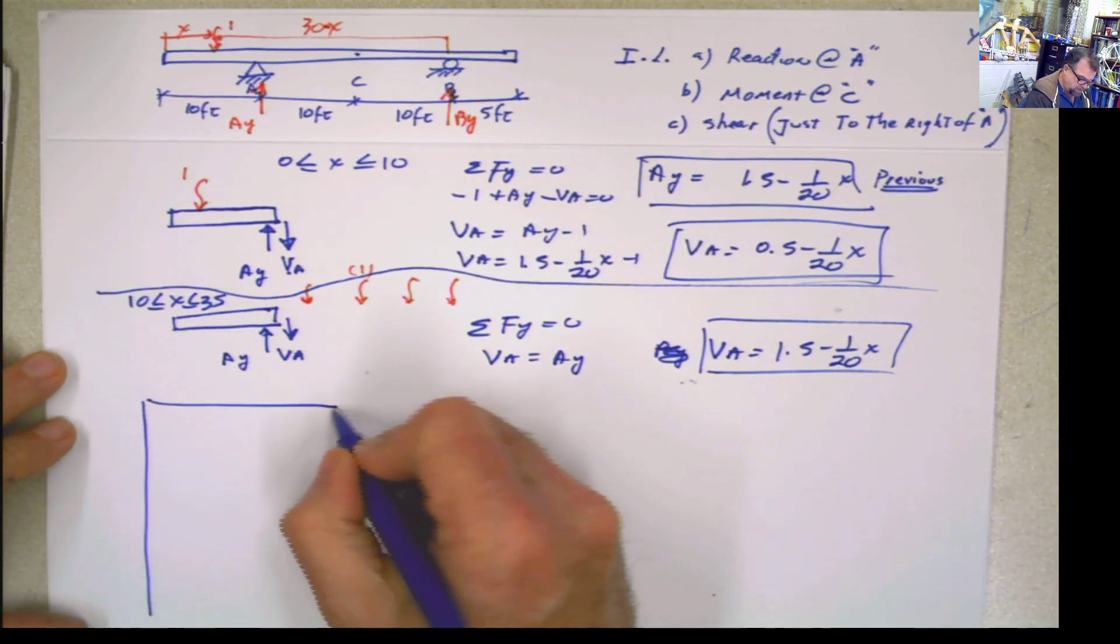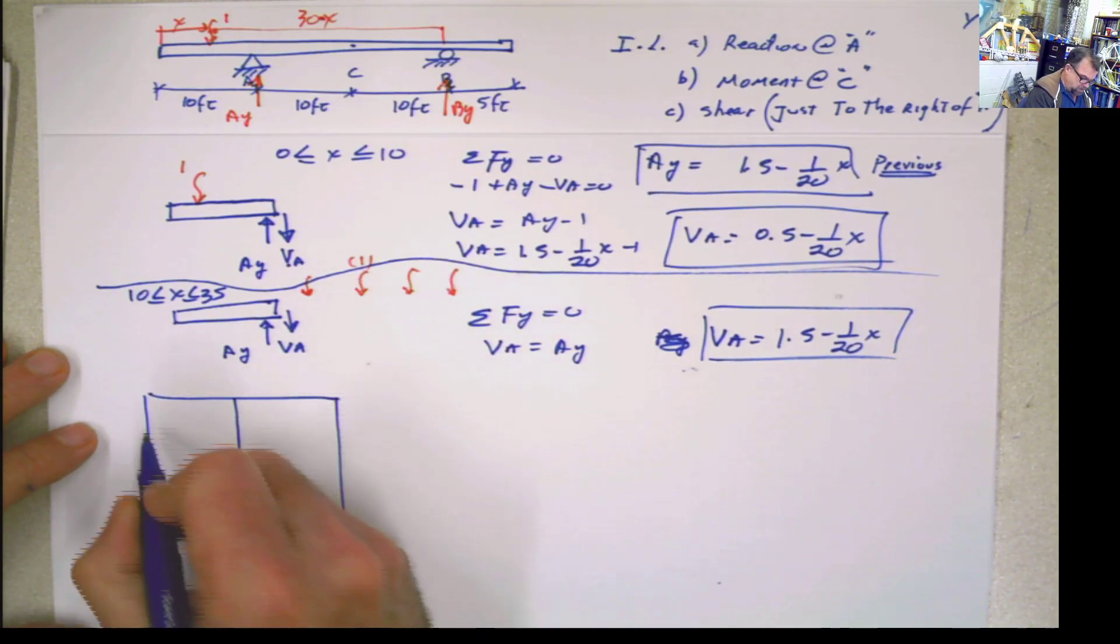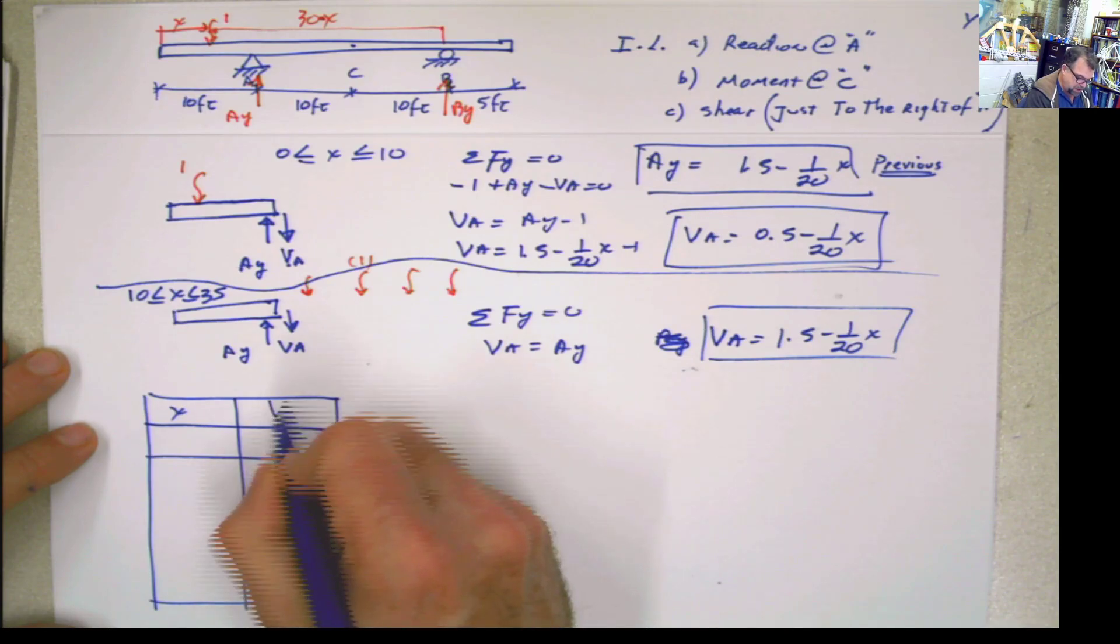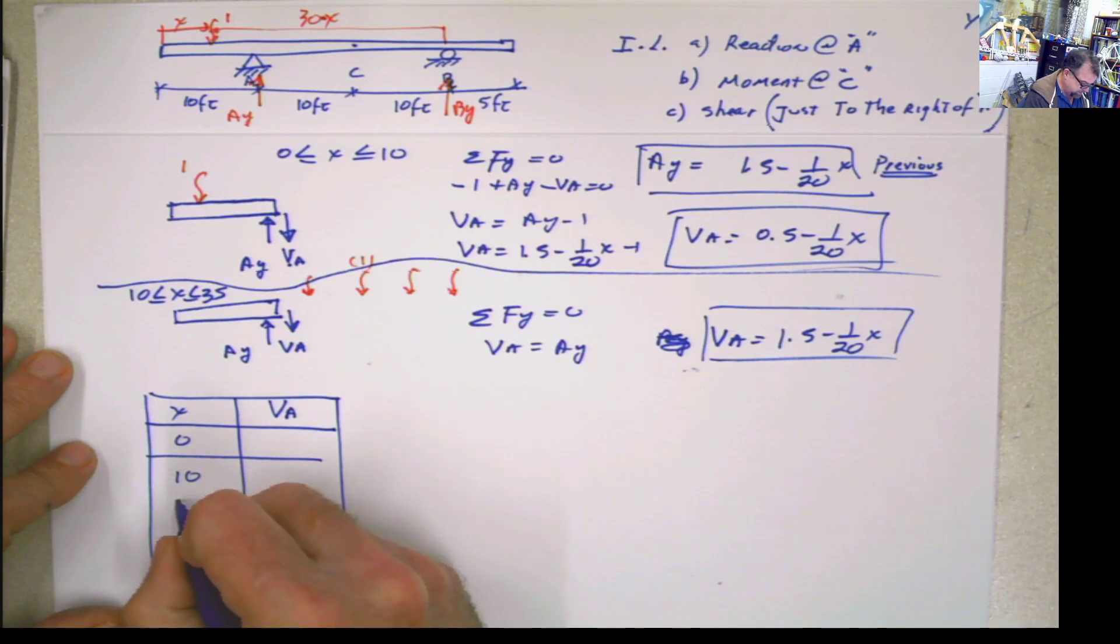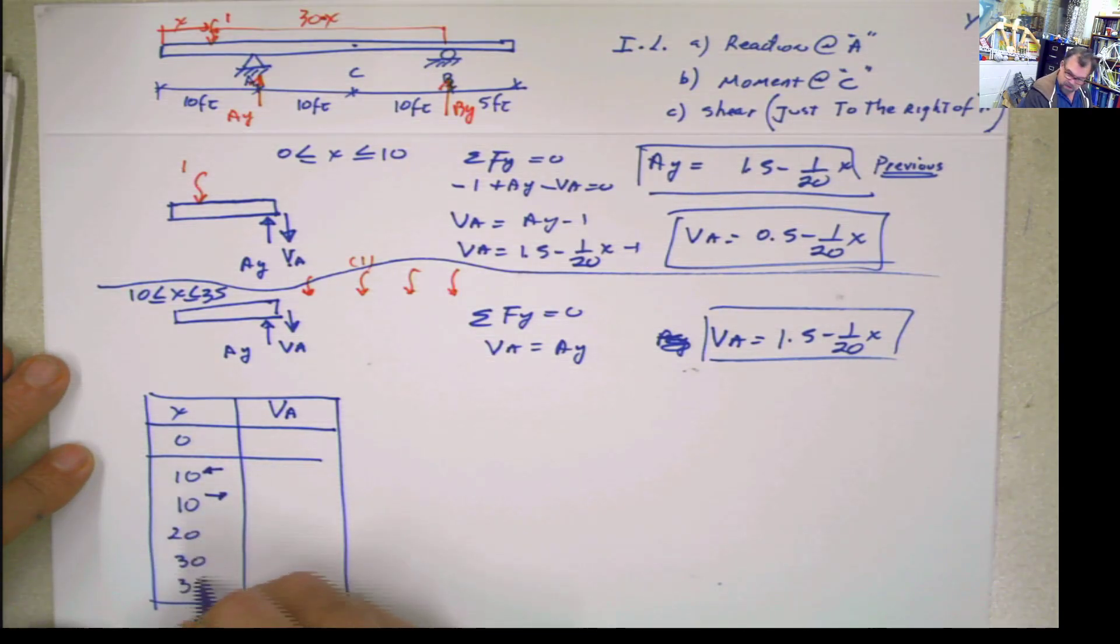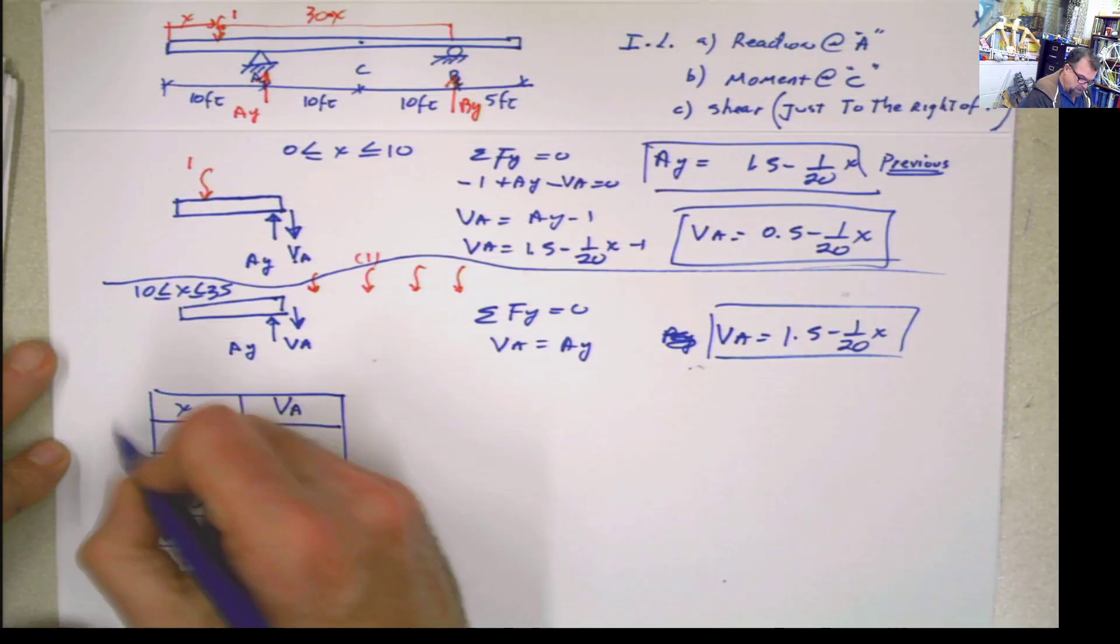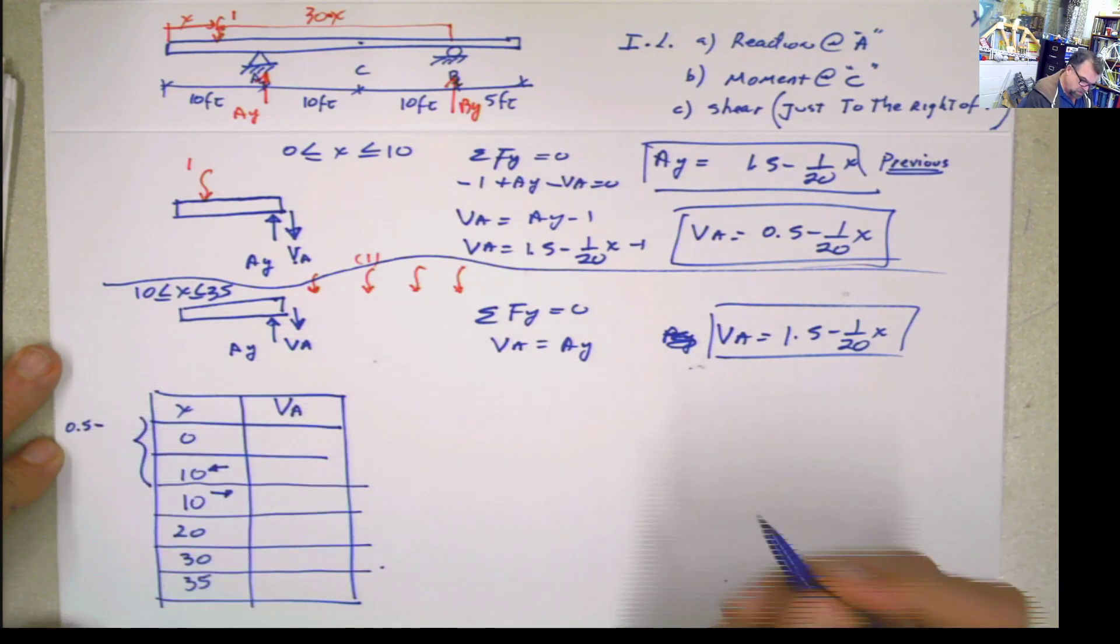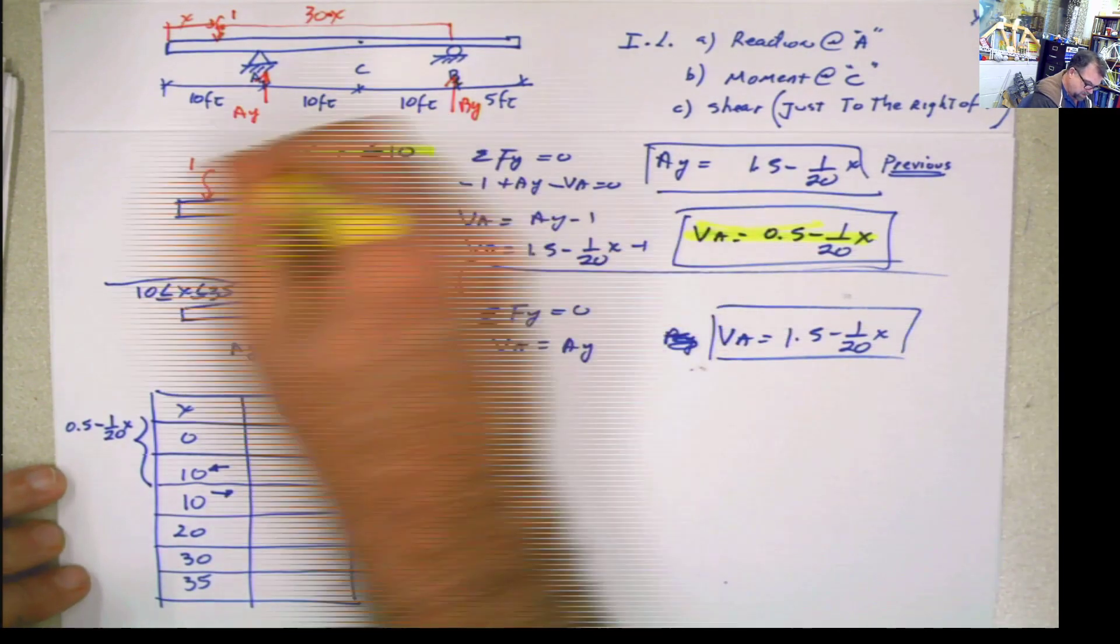Next step, table of values. What do we do? This is x, this is Va. What am I calculating? The shear just to the right of the support A at 0, 10. Once again, because at 10 it changes, I'm going to copy 10 again. I'm going to say this is 10 when I was in this side of the beam, this is 10 when I moved to this side of the beam. 10, 20, 30, and 35. What are we doing in this side? Well, in this side, this part, the Va is going to be 0.5 minus 1 over 20x, because we are here and here and there.